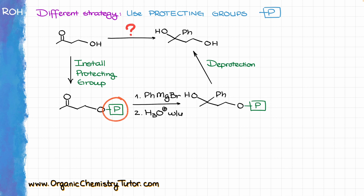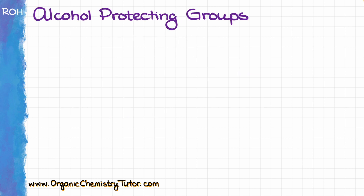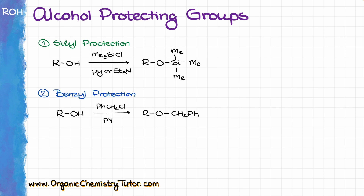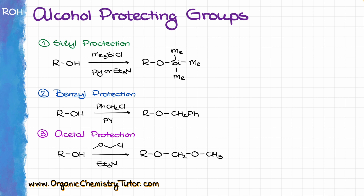Once we're done, we can take that protecting group off and recover our original functional group via the deprotection step. There are three common types of protecting groups for alcohols: silyl protection, benzyl protection, and acetyl protecting groups. Each has its strengths and weaknesses, and the most universal of the three is silyl protection, so let's talk about that one first.